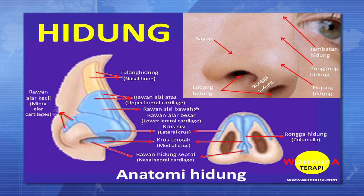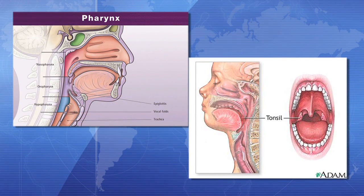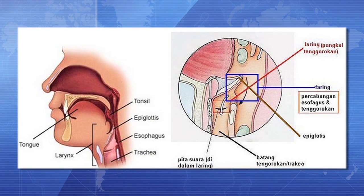Struktur pernapasan manusia secara umum terdiri dari: pertama, hidung yang terdiri dari hidung bagian luar dan rongga hidung yang terbagi menjadi dua dengan adanya septa dari tulang rawan. Kedua, faring dan tonsil merupakan percabangan dua saluran, yaitu saluran pernapasan atau nasofaring pada bagian depan dan saluran pencernaan atau orofaring pada bagian belakang.